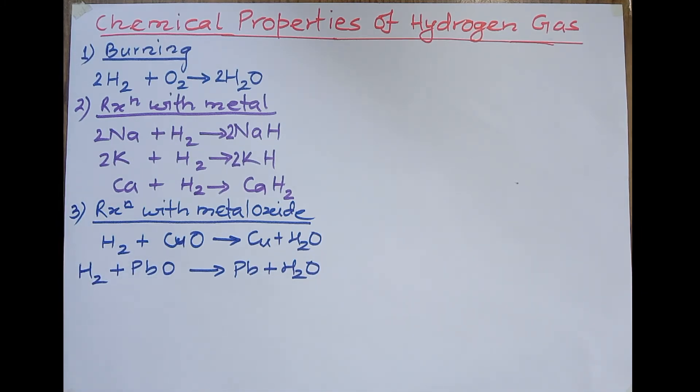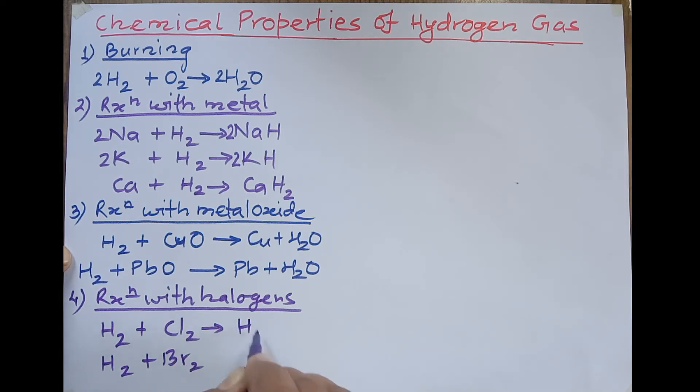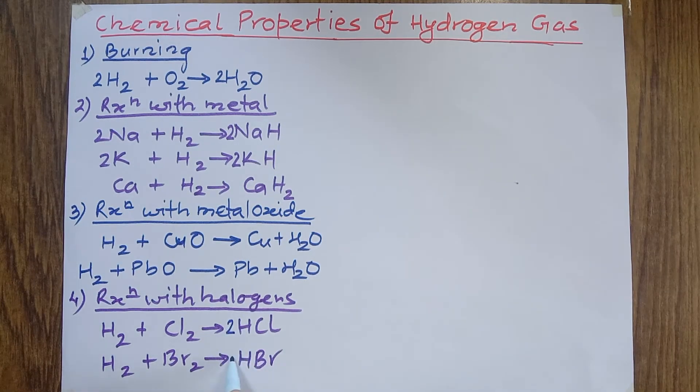Number four, when hydrogen reacts with halogens. Reaction with halogen. The elements which lie in group 7 of periodic table: fluorine, chlorine, bromine, iodine etc. When hydrogen reacts with them, it forms halides. Hydrogen chloride (HCl) and hydrogen bromide (HBr). We can balance this way: H2 + Cl2 → 2HCl, H2 + Br2 → 2HBr.